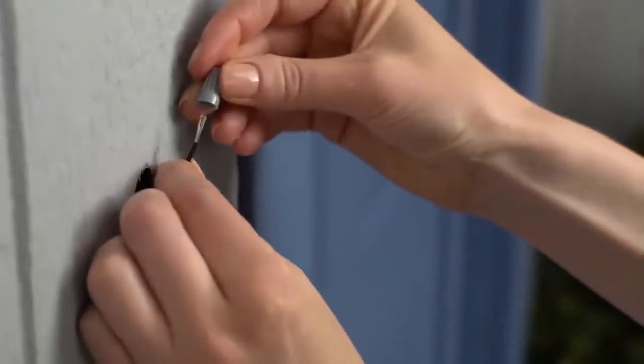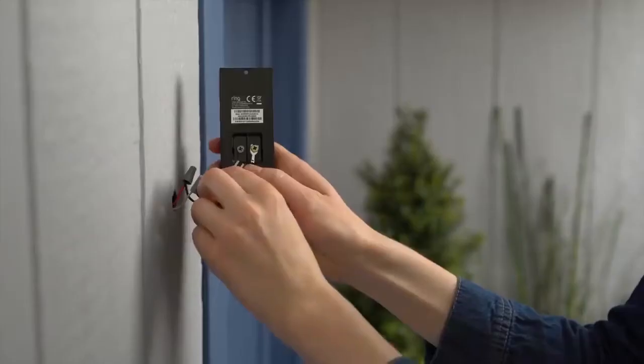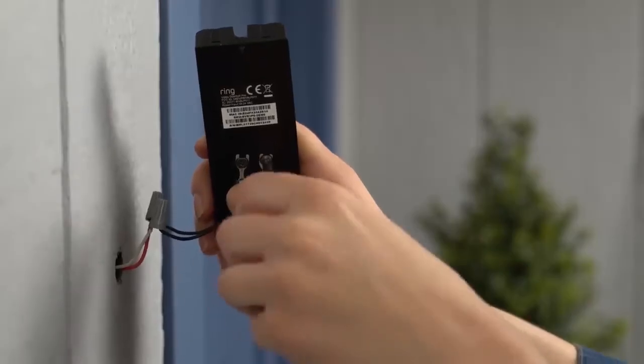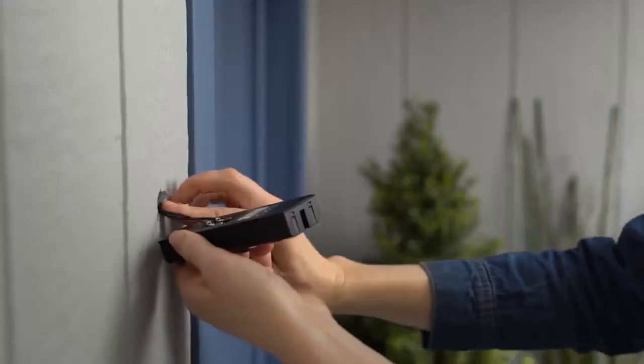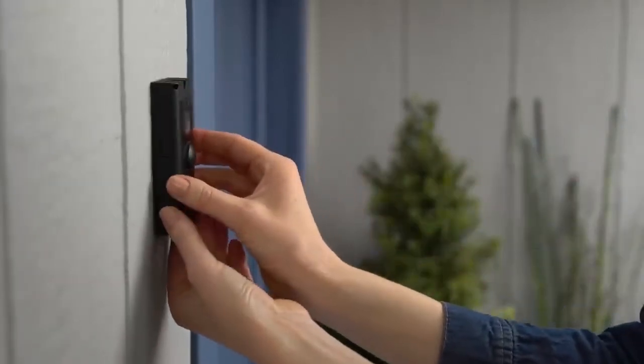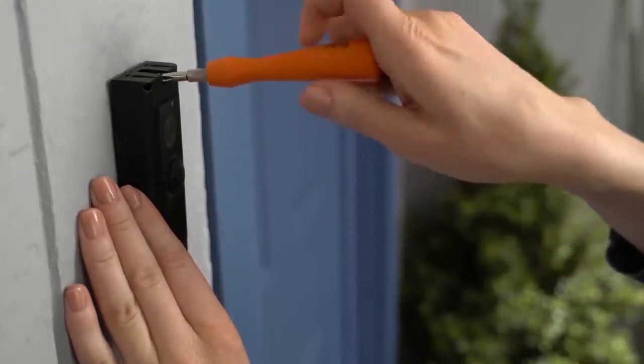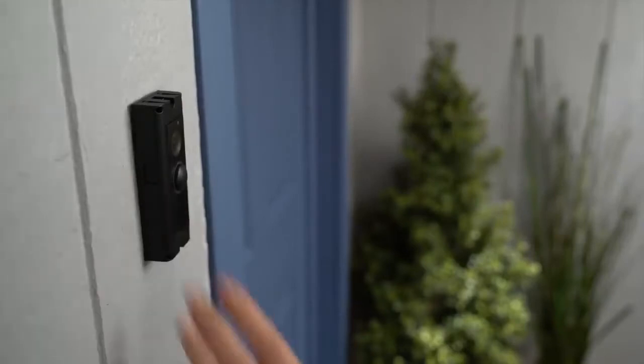To do this, first use the included wire nuts to connect the wire extenders to your doorbell wires. Then loosen the screws on the back of your Ring Doorbell, slip one wire extender under each screw, and retighten. Finally, feed all the wiring into the hole in your wall until your Video Doorbell Pro can sit flush. Use the Phillips bit on your Ring screwdriver to secure your doorbell to the wall with the provided mounting screws.